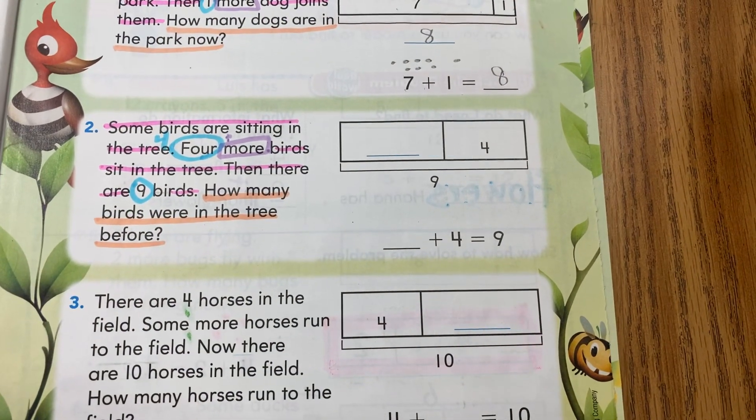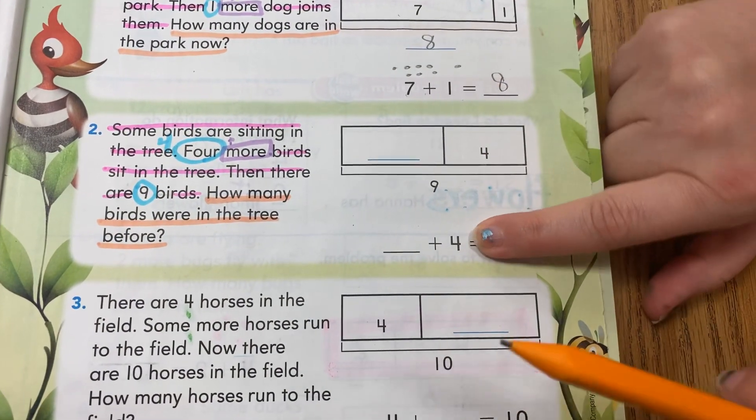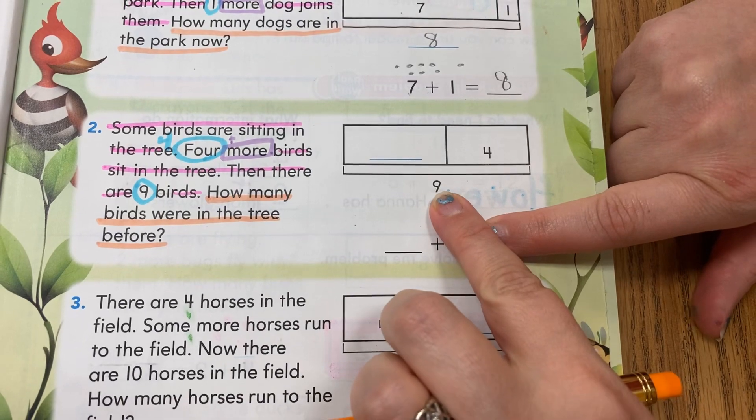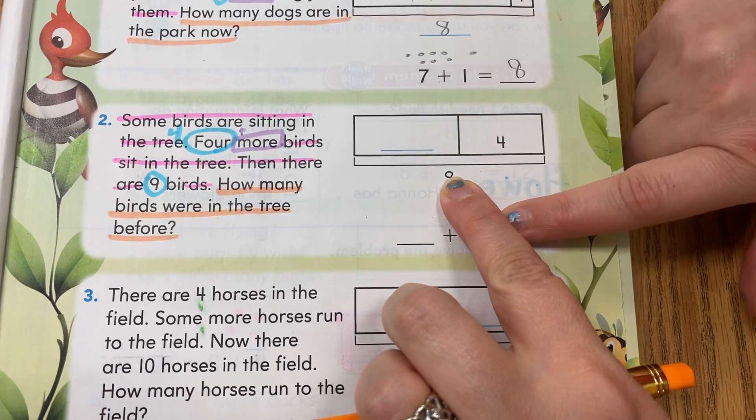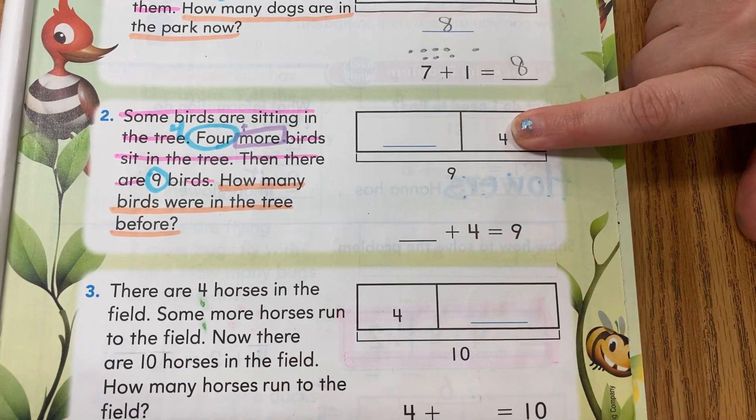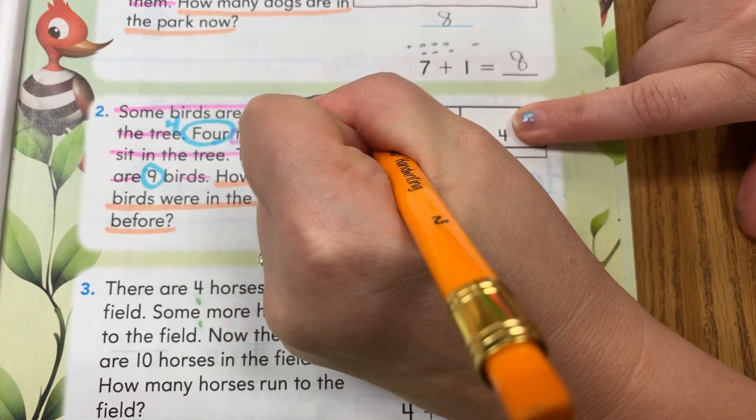What we're going to do here to find the missing problem is we're going to start with our number four and we're going to count on until we get to nine. So we're going to count forward using our model. Are you ready? Here's four. Now I'm going to come up here: five.